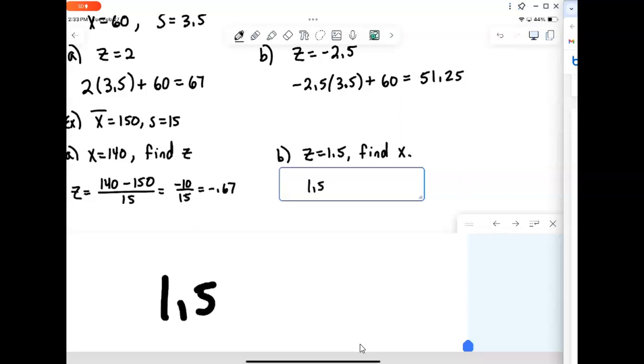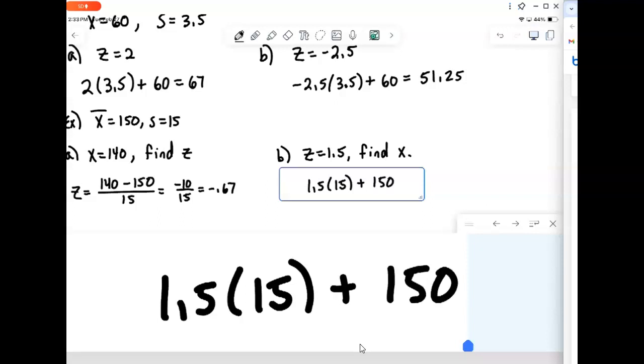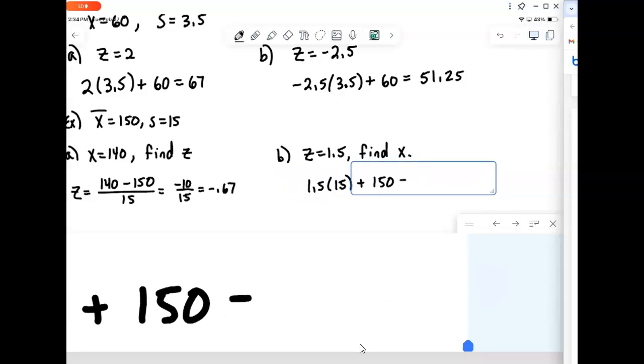So we again take our z-score, 1.5, multiply it times our standard deviation, and that gets added on to the mean. And again, if it was negative, the negative sign would take care of it being below. So we just do the multiplication there. 1.5 times 15 plus 150. And when we do, we get 172.5, our data value.